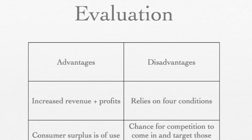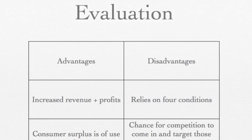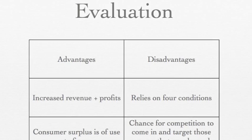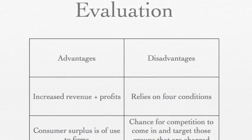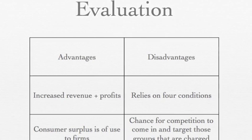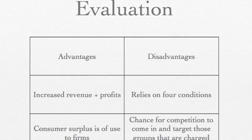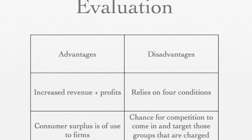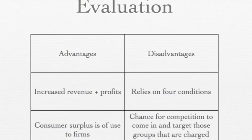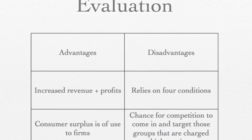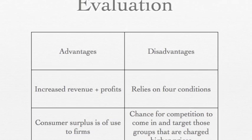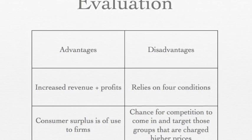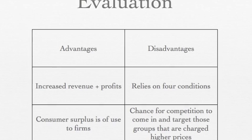Firms benefit from price discrimination — that is why they like to use it. They gain increased revenue and profits as well as more producer surplus. It is also good for consumers because it gives firms a chance to earn supernormal profits and invest in research and development, creating a greater variety of products. The maximum profit made can also be used to cross-subsidise other goods.